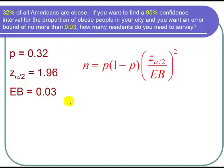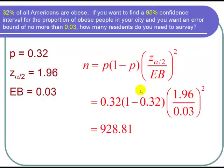The formula for finding the sample size is: N equals P times (1 minus P) times Z sub alpha over 2, divided by the error bound, all squared. Plugging in our numbers: P is 0.32, so I get 0.32 times (1 minus 0.32), Z sub alpha over 2 is 1.96, and our error bound is 0.03. I square it, put that in my calculator, and I got 928.81.